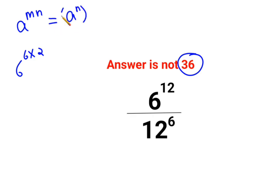a raised to n, the whole raised to m. So this can be written as 6 raised to 2, the whole raised to 6. So I can write this as 6 raised to 2, the whole raised to 6, divided by 12 raised to 6.